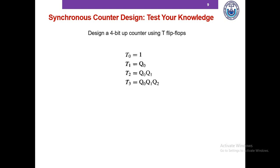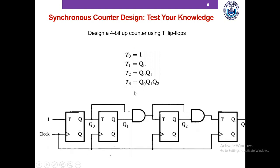Hopefully you have gotten something like this. These are the inputs of the 4 T flip-flops, and if we draw this we get a 4-bit up counter requiring 4 T flip-flops all clocked with the same clock. This is our 4-bit synchronous up counter using T flip-flops.